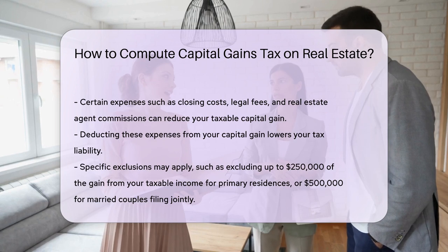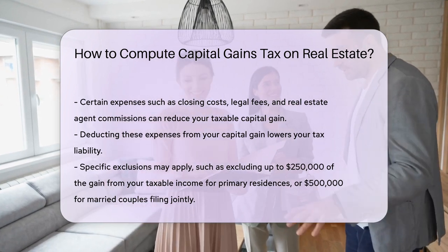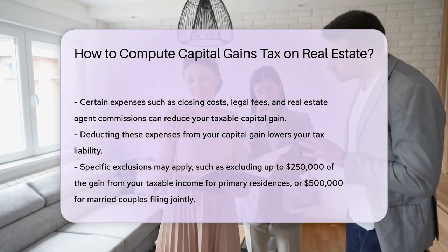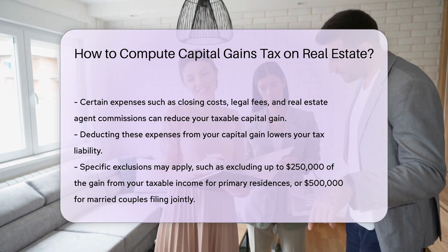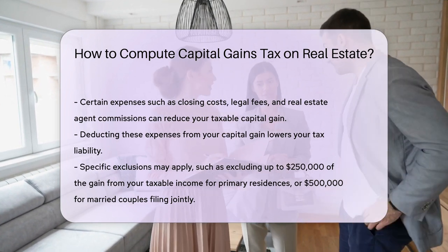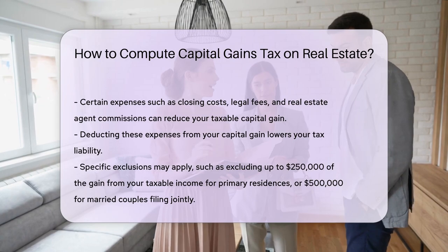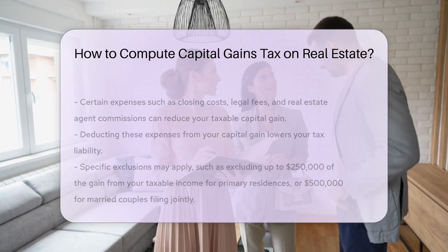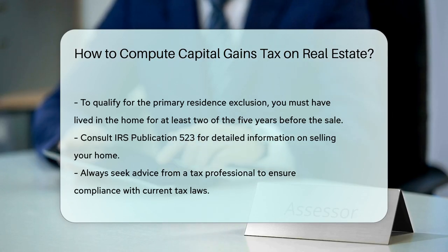Certain specific exclusions may apply. For example, if the property was your primary residence, you might exclude up to $250,000 of the gain from your taxable income, or $500,000 for married couples filing jointly.